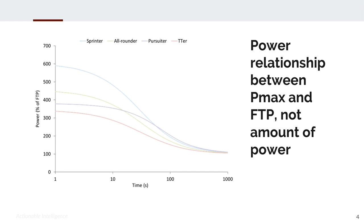To give an example, your phenotype could be a sprinter, meaning you have a higher amount of power versus its relationship to your threshold, your FTP power. Further out in a power duration curve, it's the shape of the curve that makes you a sprinter, not its absolute height.